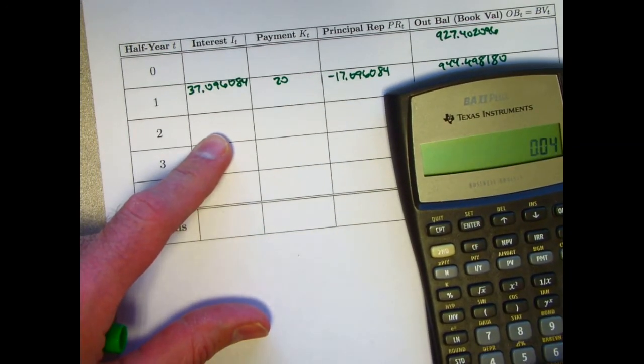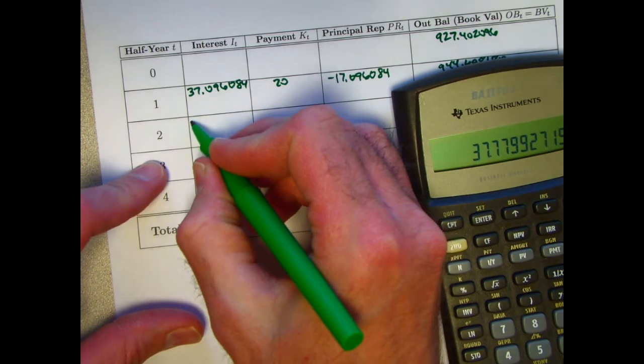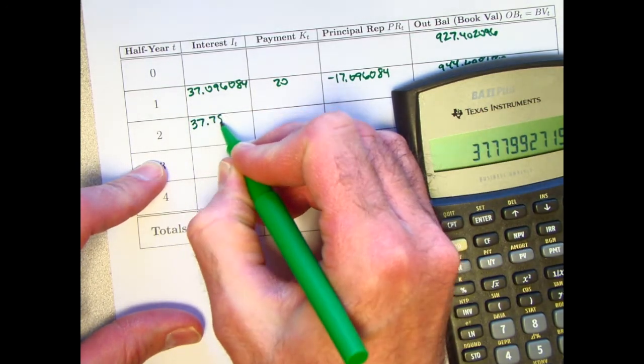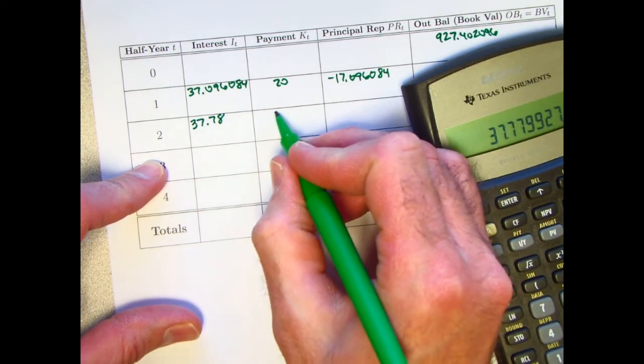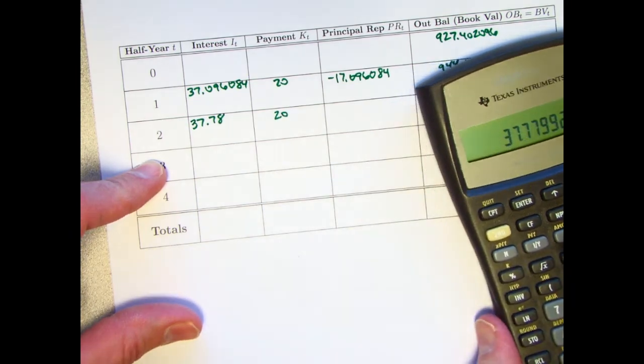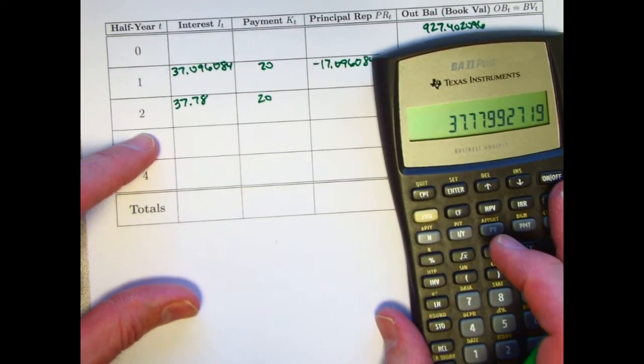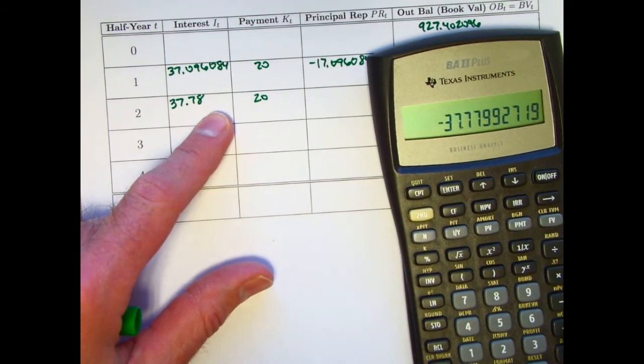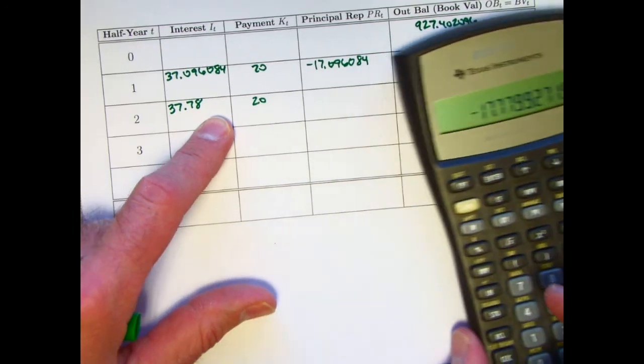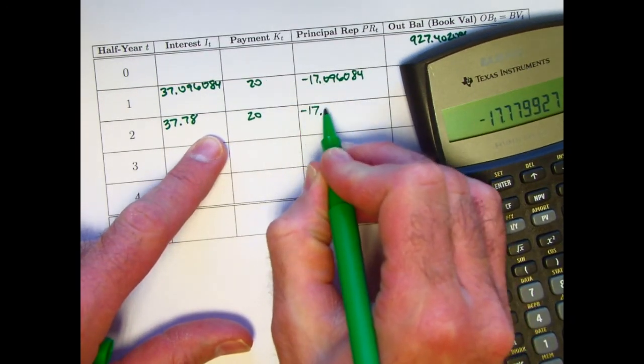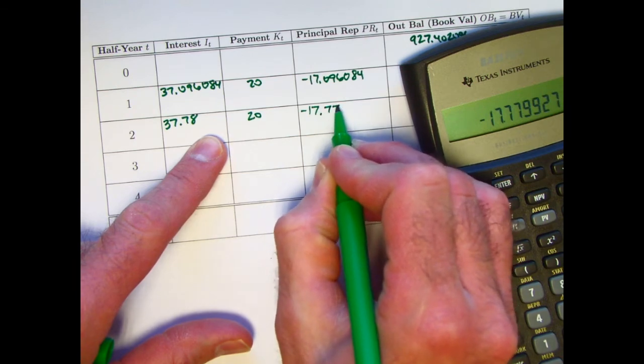Multiply that by 4%. The interest owed at time 2 is 37.78. But the payment is still less than that. They're not even covering their interest. It's still 20. Take 20 minus this to get a negative principal repaid.